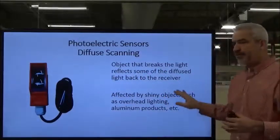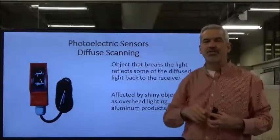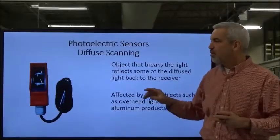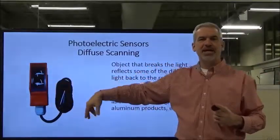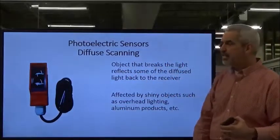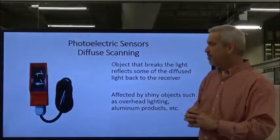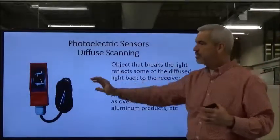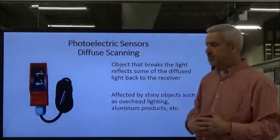There are drawbacks to the diffused type, though. One issue I saw was when overhead lighting was changed to higher-efficiency lights — the brighter light glare went into the receiver, making the sensor think it detected a part when there really wasn't anything there. They had to put little hoods over the tops to keep the overhead light from interfering with the diffused light trying to bounce back.